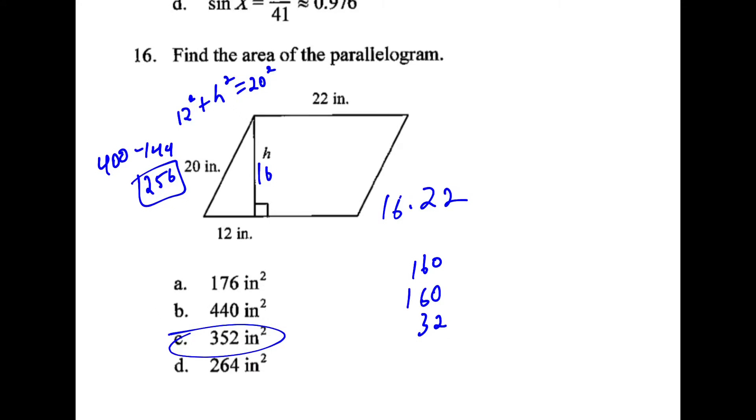So what we can do is figure out that because this is a right triangle and we know the hypotenuse 20 and we know one of the legs, we can use the Pythagorean theorem to figure out the height which is 16. Now that we know the height and the length here, 22, take 16 times 22 and you get 352.